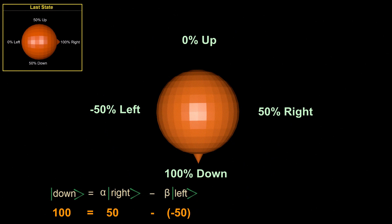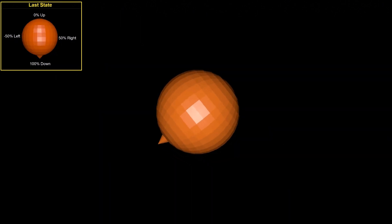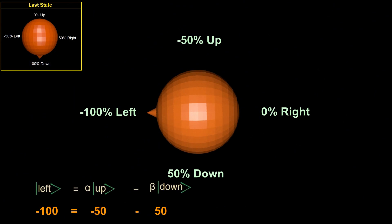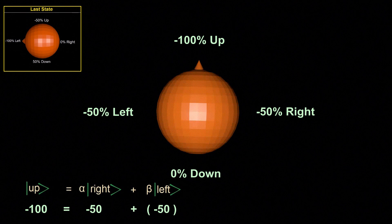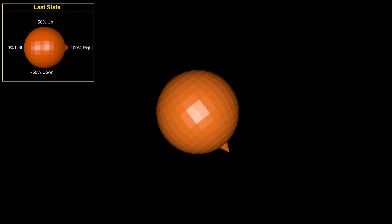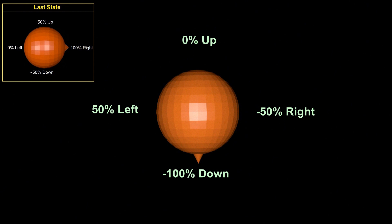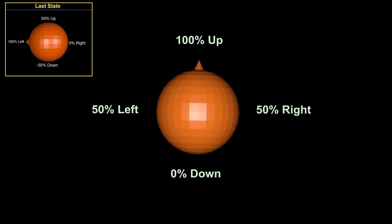Rotating another 90 degrees clockwise, the spin left state is still leaving, so it becomes negative 100%. Negative 50 minus 50 equals negative 100. After a full 360 degree rotation, all possible non-zero amplitudes are in a negative state — 360 degrees of rotation does not return the electron to its initial state. After one more full rotation — for a total of 720 degrees — it finally reaches the initial non-negative state.